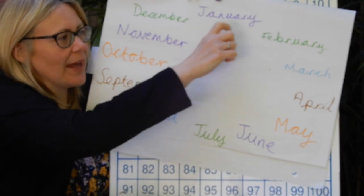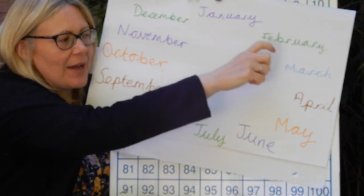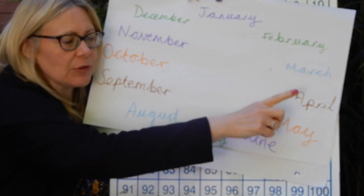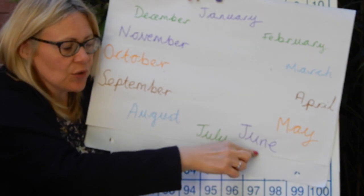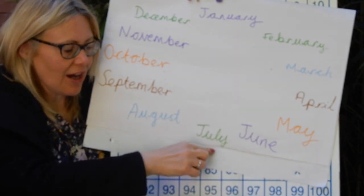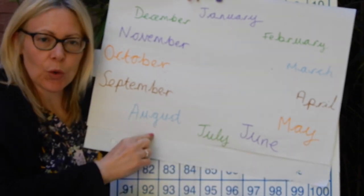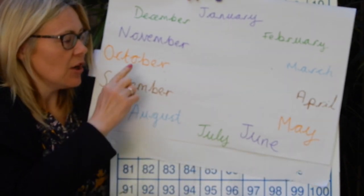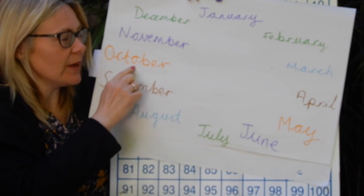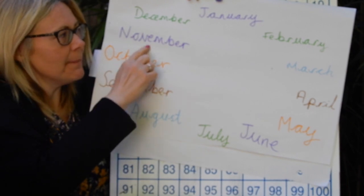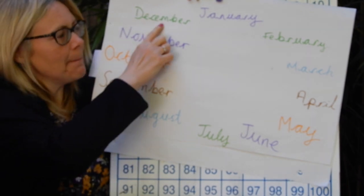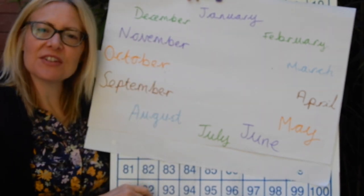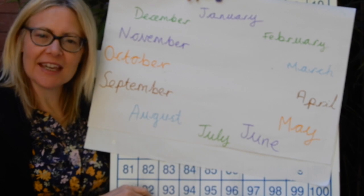January, February, March and April, May, June, July and August, September, October, November, December - these are the months of the year.